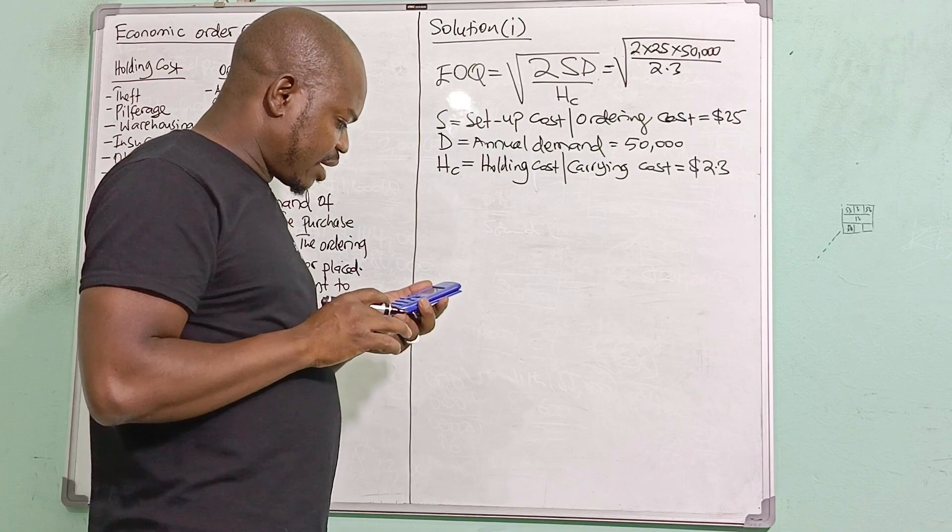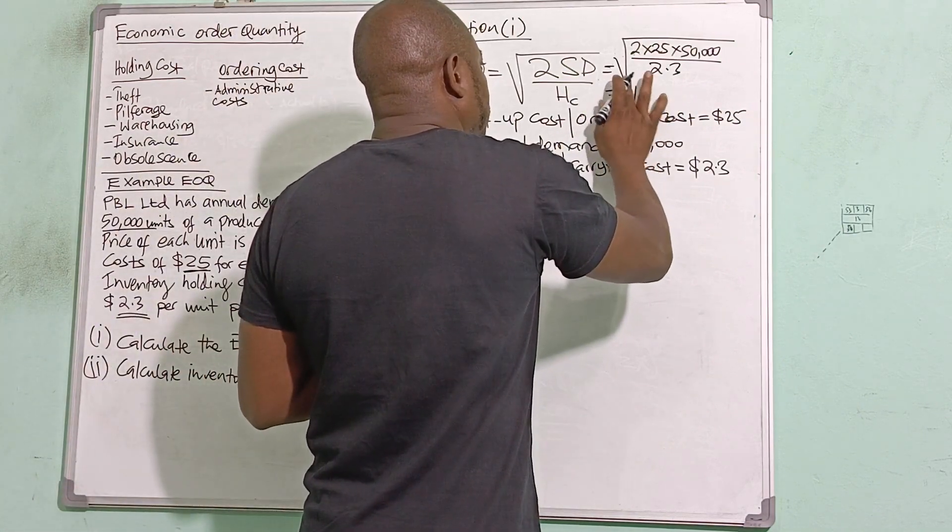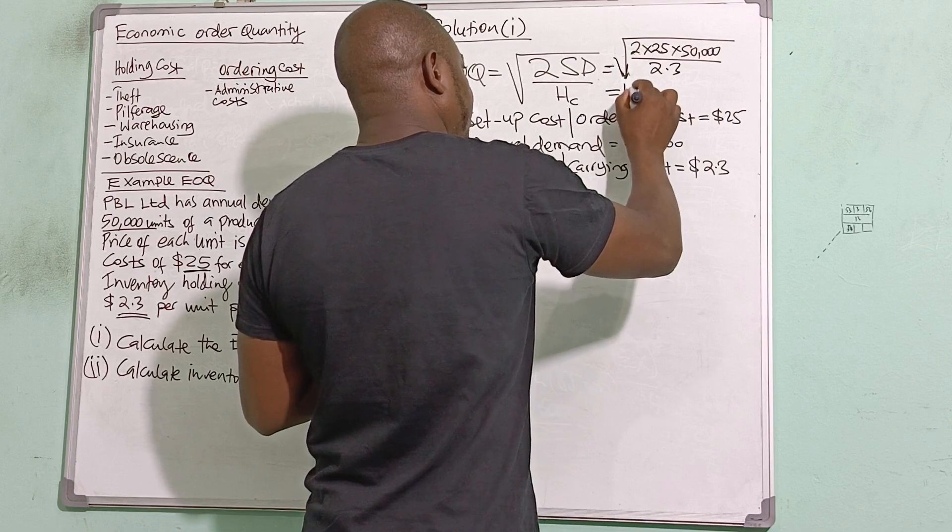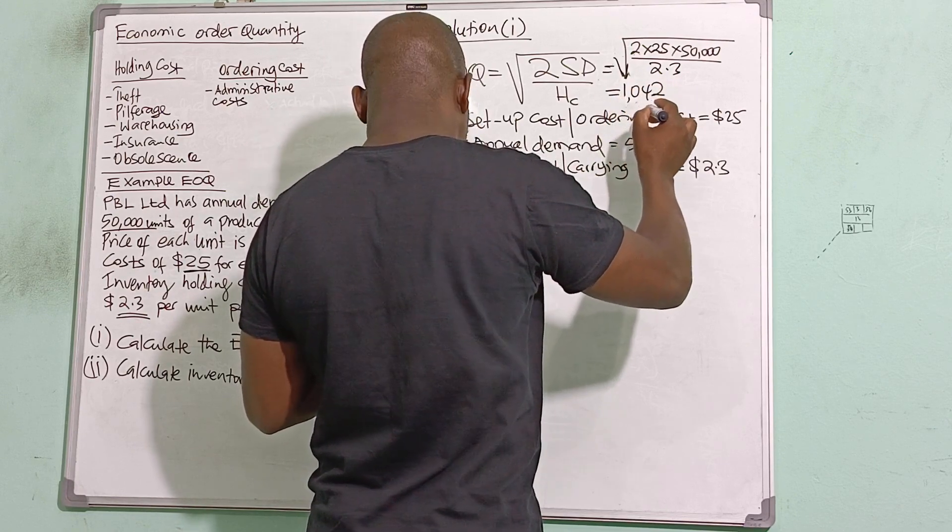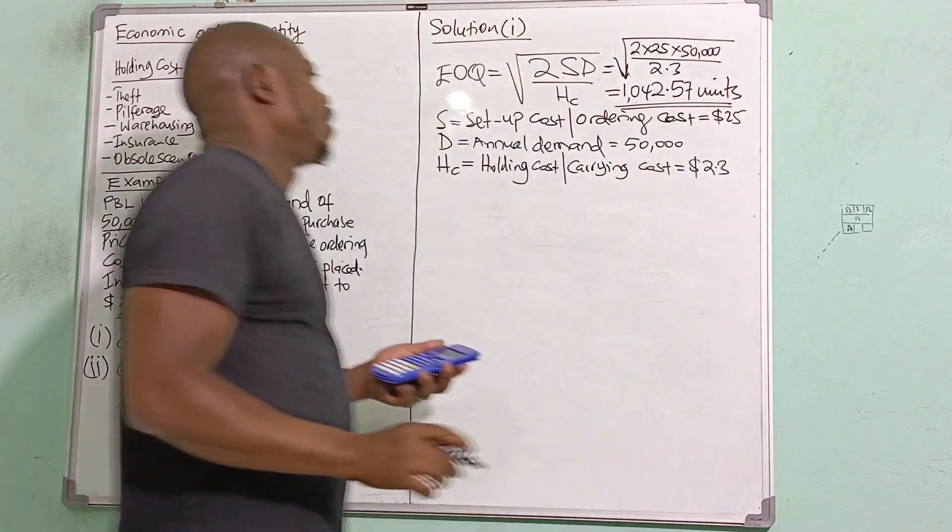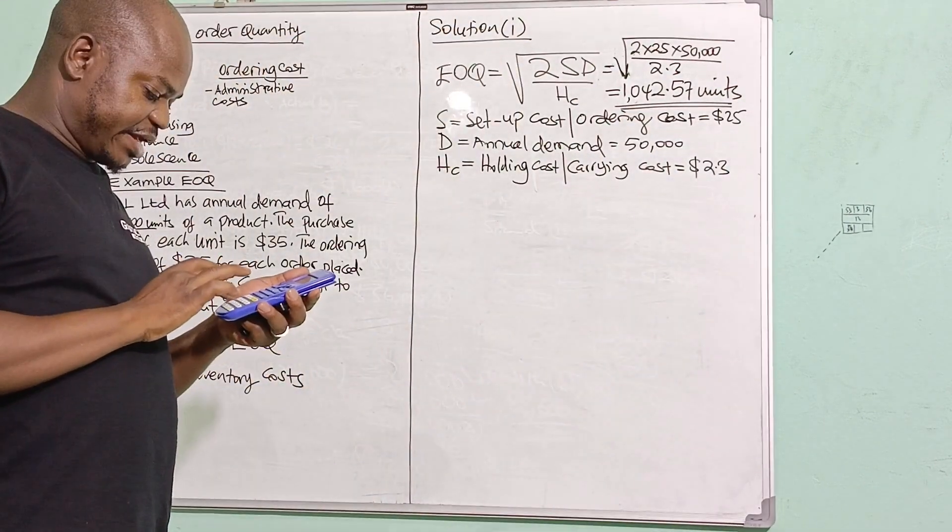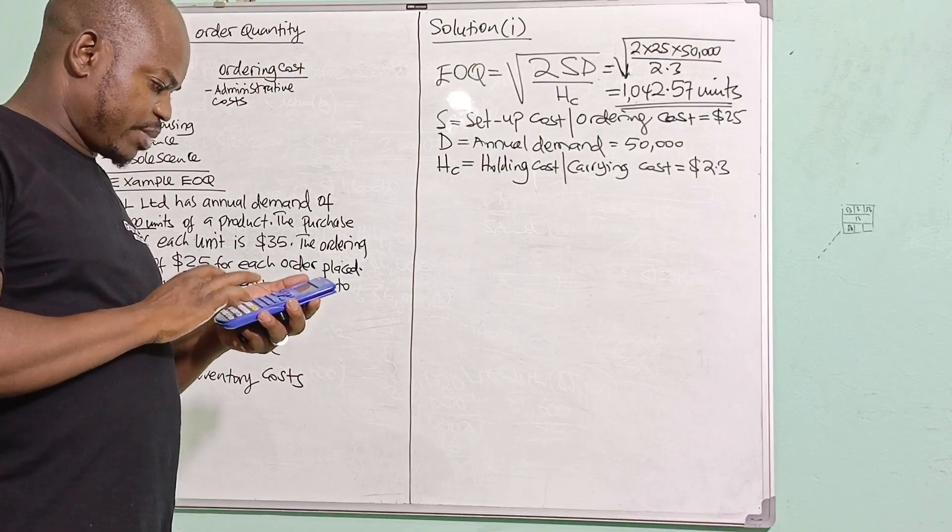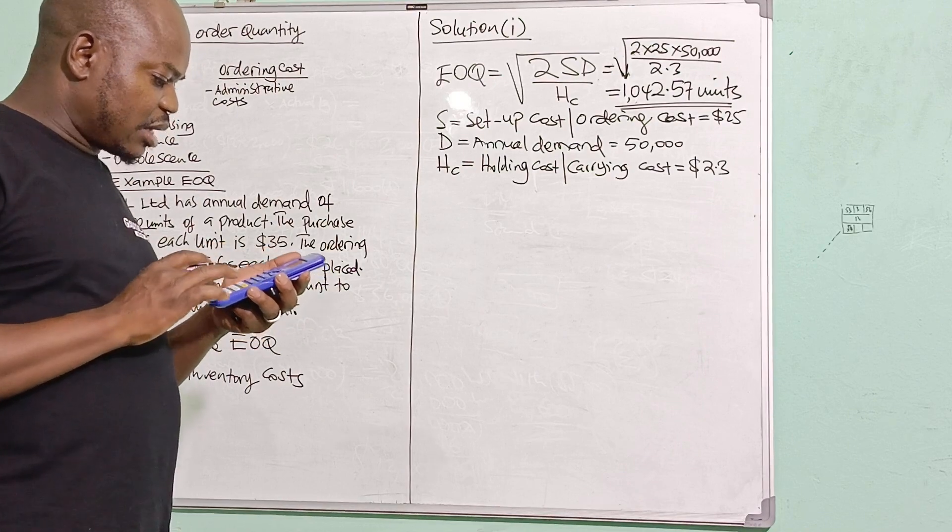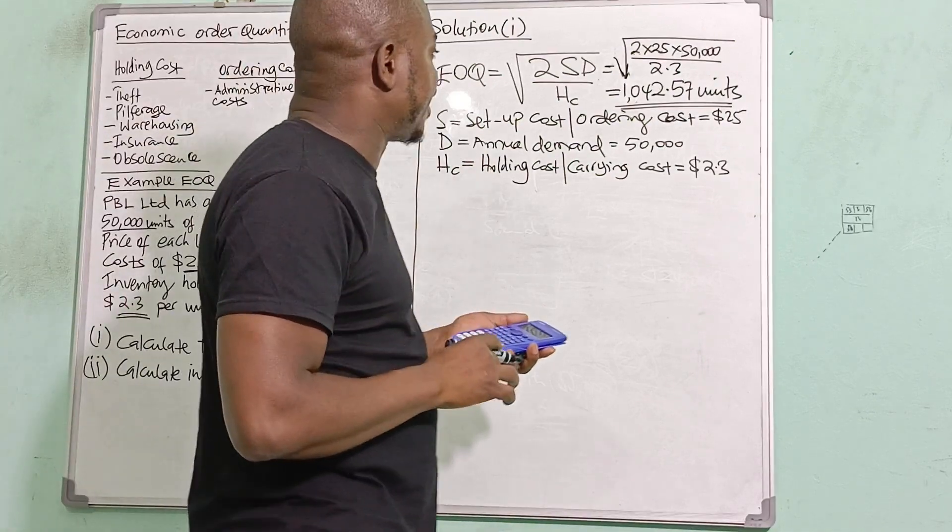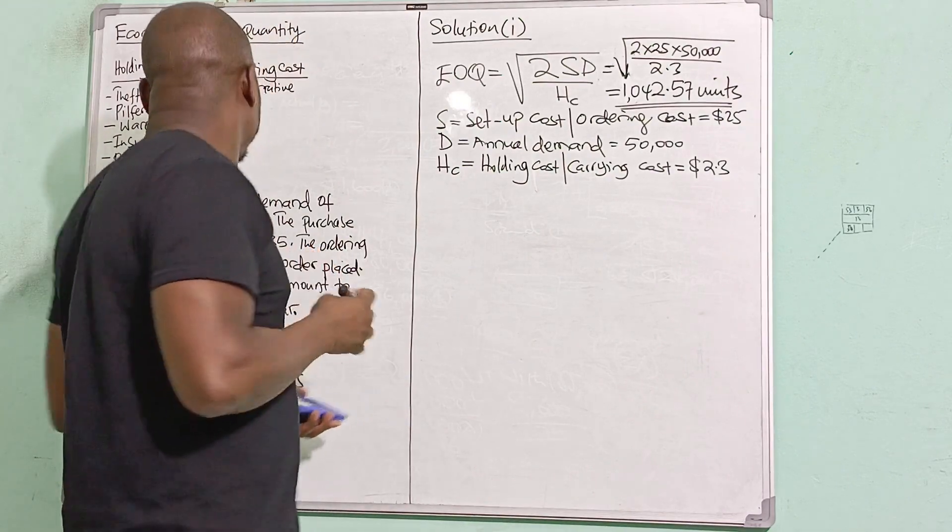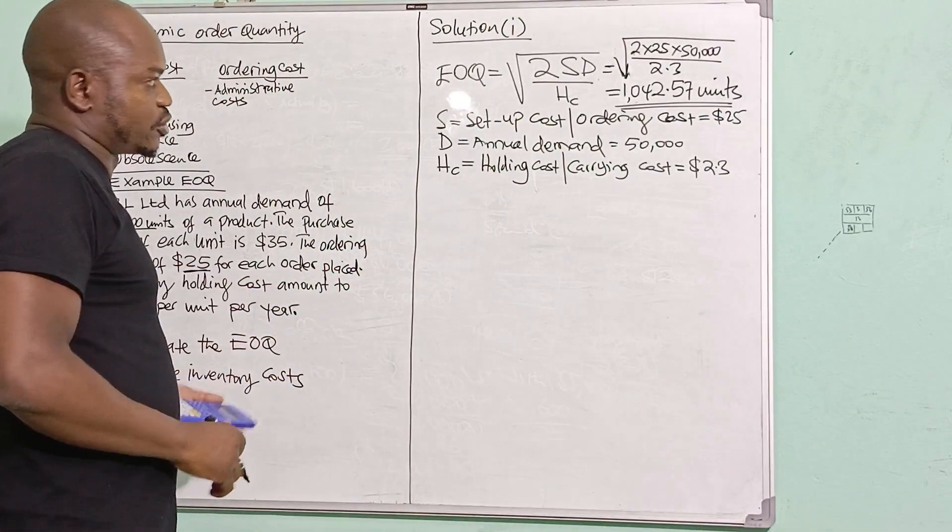I have 1,042.57 units. So that's basically my EOQ, economic order quantity. So what this implies is every time I place an order, I should be ordering 1,042.57 units. In short, I can simply say 1,043 units is the ideal order size, which will seek to minimize both the holding and ordering cost.